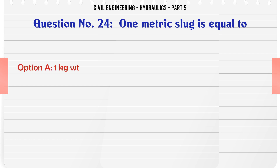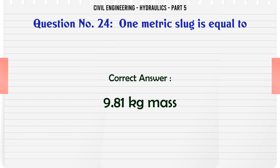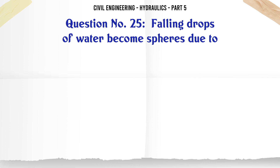One metric slug is equal to: A. 1 kg weight, B. 9.81 kg weight, C. 9.81 kg mass, D. 0.98 kg weight. The correct answer is 9.81 kg mass.